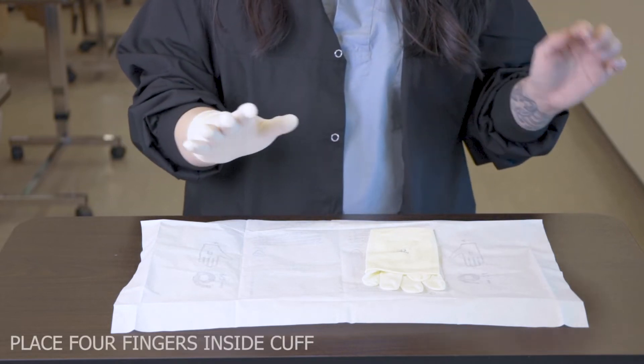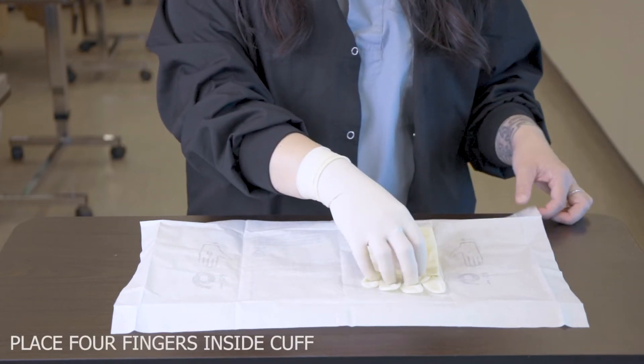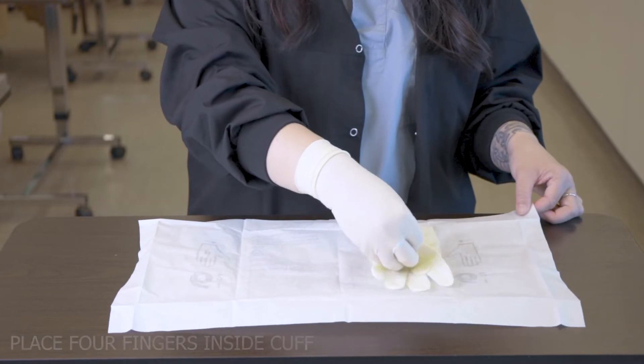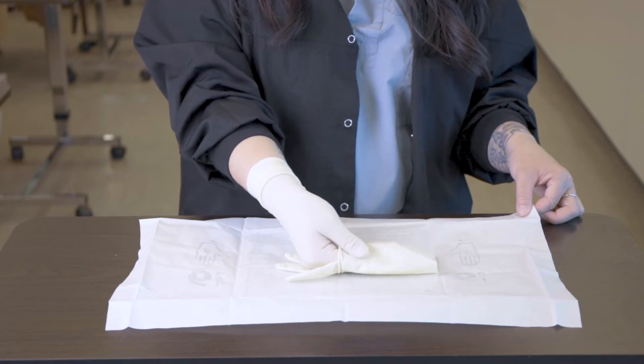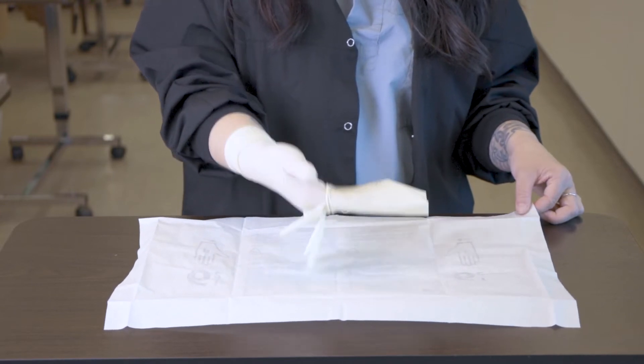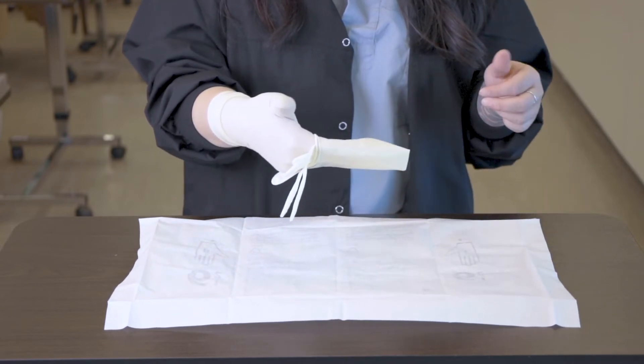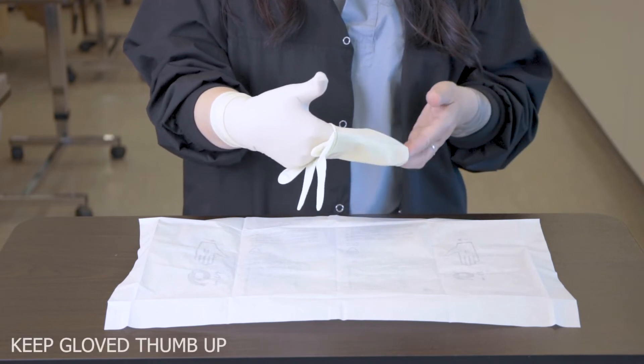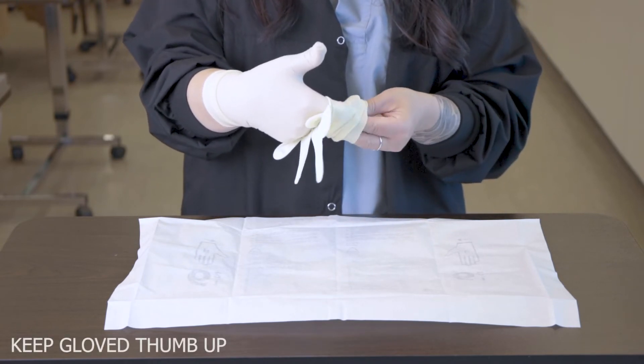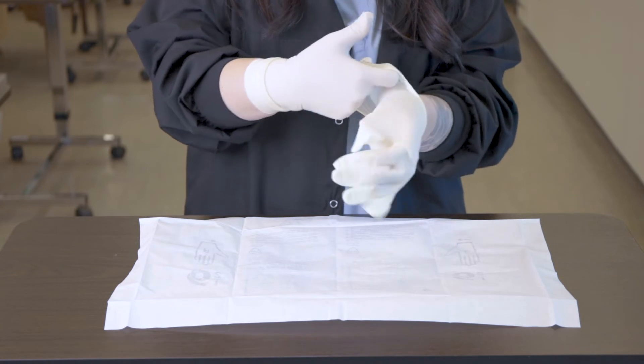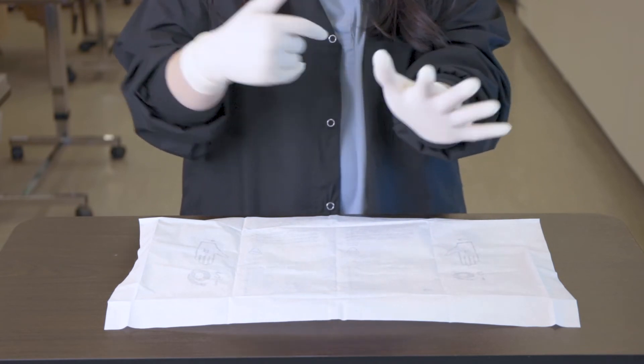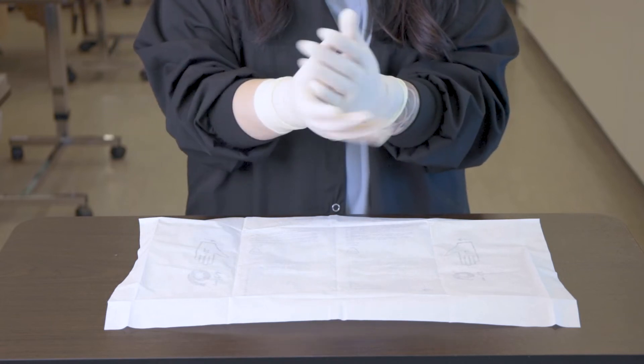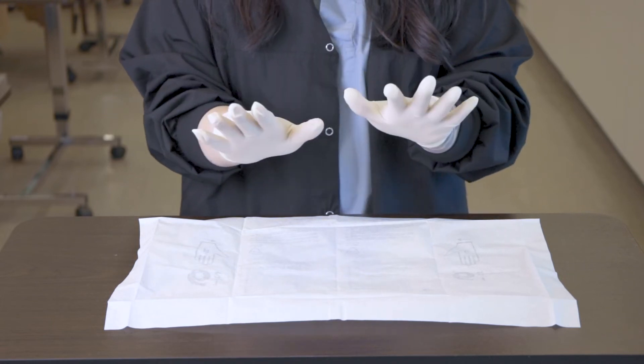Now I'm going to take my gloved right hand and place my four fingers inside the cuff of the left glove, and I'm using my left fingers to stabilize my field at the one inch border. I also turned the glove horizontally to allow me some space, and I picked up the glove from the field, kept my right thumb up to avoid contamination. I'm also making sure that my hands are away from my face and chest and the table, and adjusted the glove as necessary.